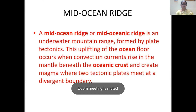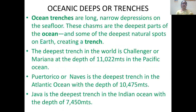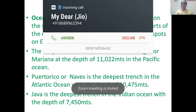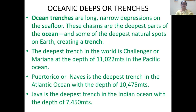Oceanic deeps or trenches are the deepest part of the ocean - regions above 6000 meters depth. The deepest trench in the world is the Challenger or Mariana Trench, at a depth of 11,022 meters in the Pacific Ocean. In the Atlantic Ocean, the Puerto Rico Trench is the deepest at 10,475 meters. The Java Trench is the deepest in the Indian Ocean at 7,450 meters.